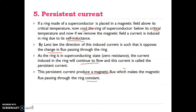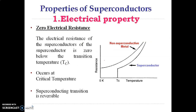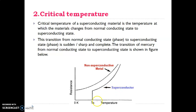We will now discuss all the properties of the superconductors. The first is zero electrical resistance — the material has zero electrical resistance. The second is critical temperature, which is the temperature of transition from the normal state to the superconducting state.